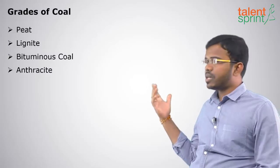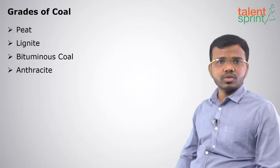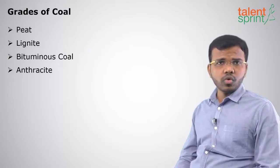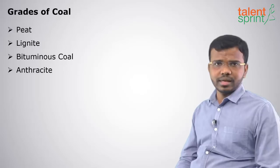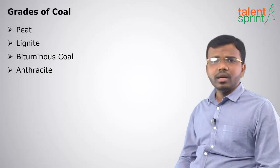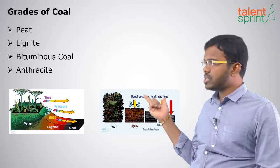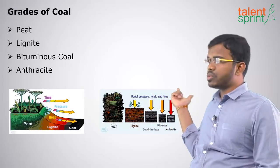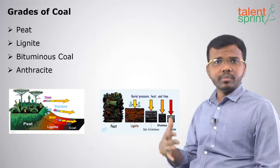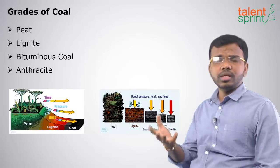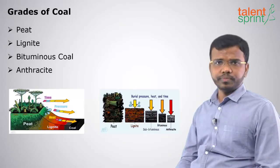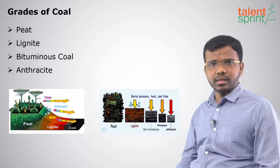Next, we shall see the grades of coal. The lowest grade of coal is peat, next is lignite, then bituminous coal, and the highest grade is anthracite. These are the four basic grades of coal. Higher the pressure or higher the number of years of formation, the higher the grade of coal obtained — that is anthracite.